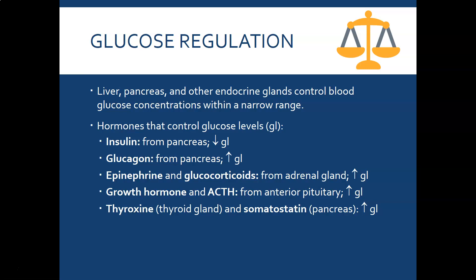Epinephrine and glucocorticoids are stress hormones — glucocorticoids include cortisol — and both are released from the adrenal glands. They increase glucose so you can make more ATP to fight whatever threat your body perceives. Growth hormone and adrenocorticotropic hormone (ACTH) both come from the anterior pituitary. ACTH stimulates the release of glucocorticoids such as cortisol. They also raise glucose, since growth requires energy and ACTH is related to the stress response.